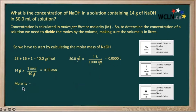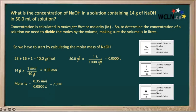Now we can finish off our calculation for molarity, which is moles per liter — meaning divided by our liters. So we have 0.35 moles divided by 0.05 liters, giving us 7 as our final answer. That is the molarity for this particular solution.